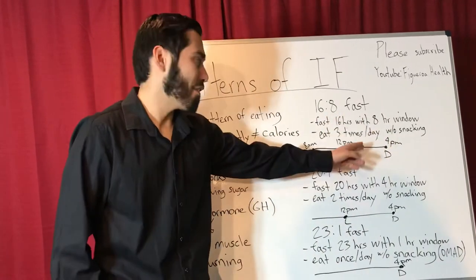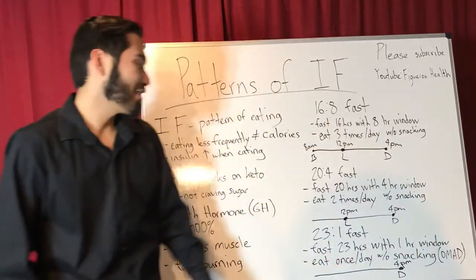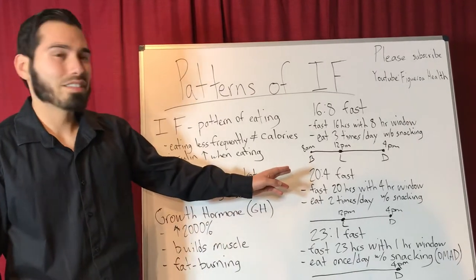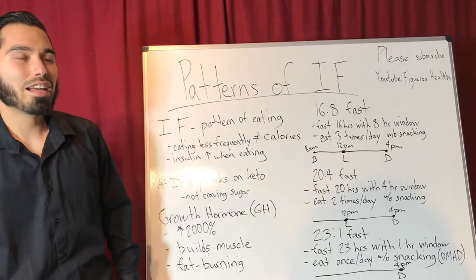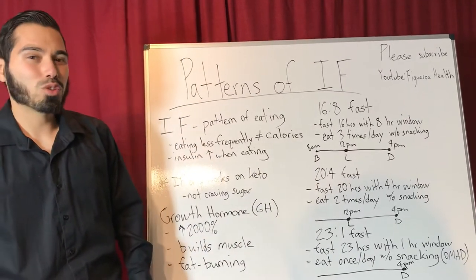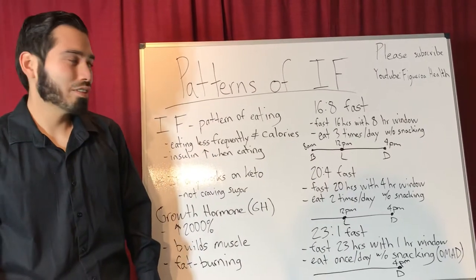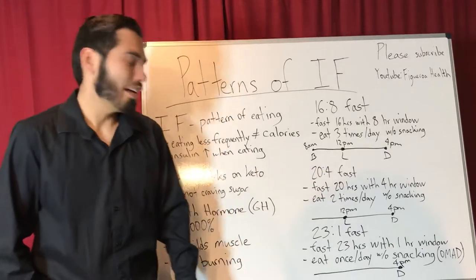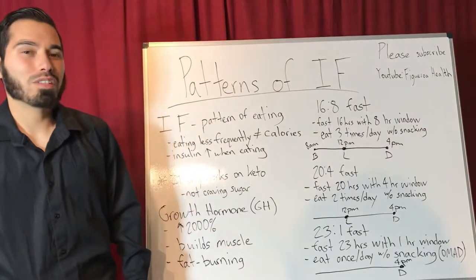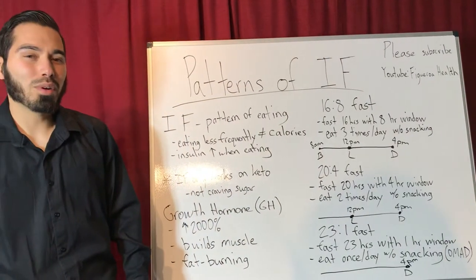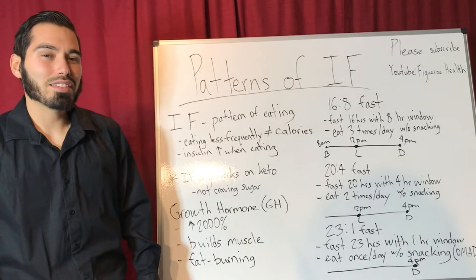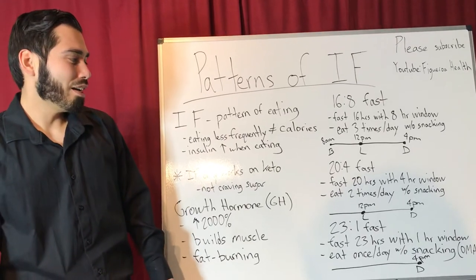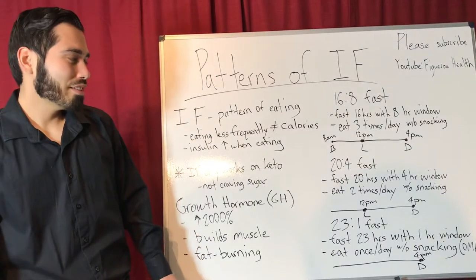There's also a 20 to 4 hour fast, meaning that you fast for 20 hours within a 4 hour eating window. That's equivalent to someone eating twice a day without snacking.